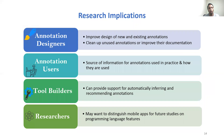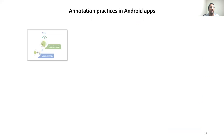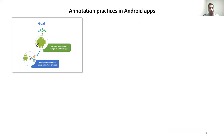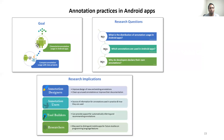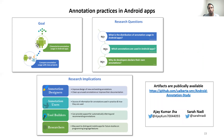We found that annotation use in Android apps is different from annotation use in general Java projects, although both are written in Java. So for future studies on programming language features, researchers may want to distinguish mobile apps. To conclude, we characterized annotation use in Android apps and compared them with general Java projects, investigating distribution at various granularity levels, different annotation types, and the purpose of custom annotations. Our research generates findings with actionable implications for practitioners and researchers. The artifacts used in this study are publicly available. I am Ajay Kumar Jha, and I will be happy to take your questions. Thank you.